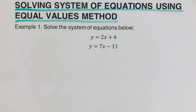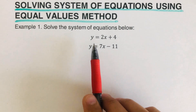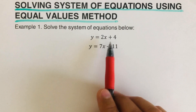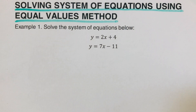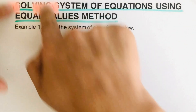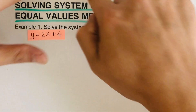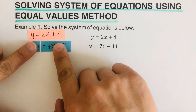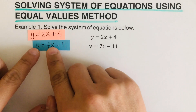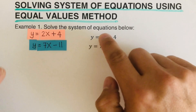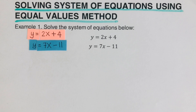I will put the link of that video in the description box below. So let's jump into the first example. We're given the equation y equals 2x plus 4 and y equals 7x minus 11. Both of them have y isolated by itself. I have created two cards here with these two equations written on them: y equals 2x plus 4 and y equals 7x minus 11.